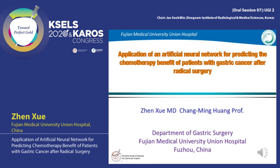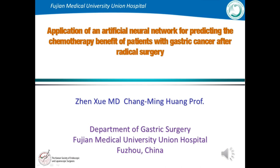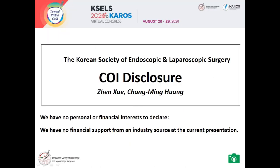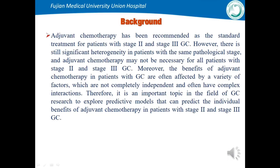Hello, everyone. I'm Zheng Xie from the Department of Graduate Research, Virginia Medical University. Thank you for the chance to introduce the application of an artificial neural network for predicting the chemotherapy benefit of patients with gastric cancer after surgery. We have no personal or financial interest to declare. The background: adjuvant chemotherapy has been recommended as a standard treatment for patients with resected stage 2 and 3 gastric cancer.